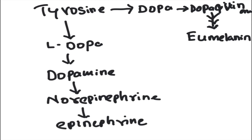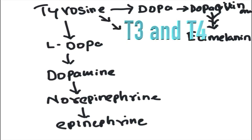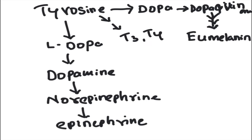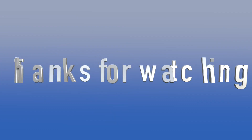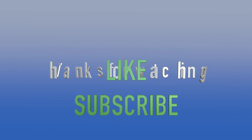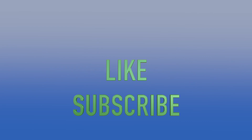Another special product that comes from tyrosine, particularly in the thyroid glands, is T3 and T4. So tyrosine can go into the synthesis of T3 and T4 in the thyroid glands.